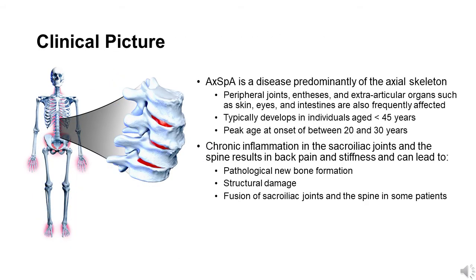Axial spondyloarthritis is a disease predominantly affecting the axial skeleton but also involves peripheral joints and entheses, as well as extra-articular organs such as skin, eyes, and intestines.